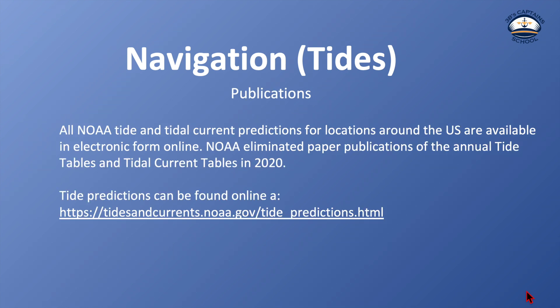All NOAA tide and tidal current predictions for locations around the US are available in electronic form online. NOAA eliminated paper publications of the annual tide tables and the tidal current tables in 2020. You can find these tidal predictions at the NOAA website, or if you just Google 'NOAA tides and currents,' you can find the website pretty easily. Let's go ahead and go to this website now.